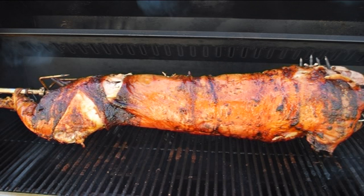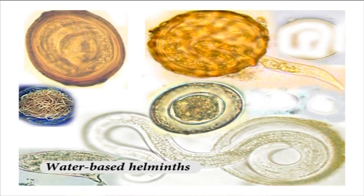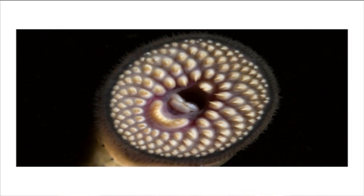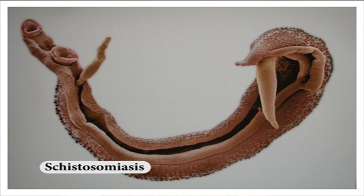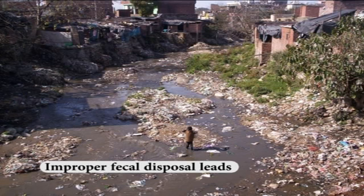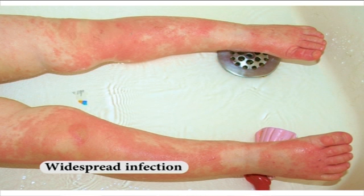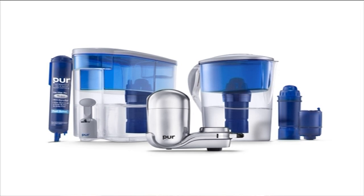The major soil-transmitted helminths associated with poor sanitation are hookworm, roundworm and whipworm, all transmitted when eggs passed in human faeces are left in the environment. Beef and pork tapeworms infect humans when infected and inadequately cooked animal meat is eaten. Water-based helminths have aquatic intermediate hosts such as snails and are responsible for diseases of the liver, gastrointestinal tract and bladder caused by schistosomes — schistosomiasis. Improper faecal disposal leads to contamination of groundwater, and human faeces contains a variety of potentially harmful pathogens.